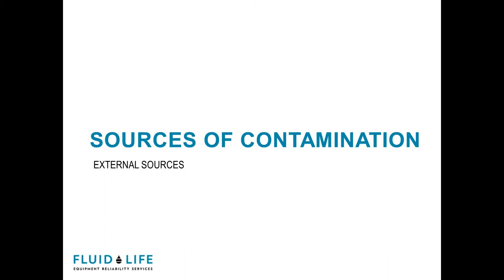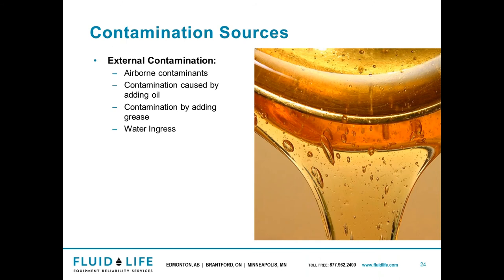External sources of contamination. You're going to get these from a few different ways: airborne contaminants, contamination caused by adding oil, contamination by adding grease, water ingress. Even during repairs or overhauls, it's really important to flush your oil at least five times. One example we've seen with external contamination is in a pulp mill where they rebuild their pumps in just an open area near production — so there's dust and everything in the air — and before the pumps are even put into service, they're already contaminated. Contrary to that, I've seen plant sites where they had a separate C-can trailer just meant for rebuilding pumps, with controlled temperature and contamination.